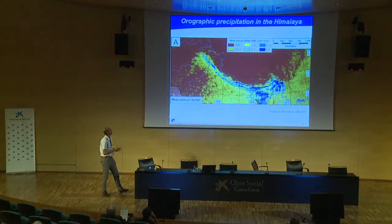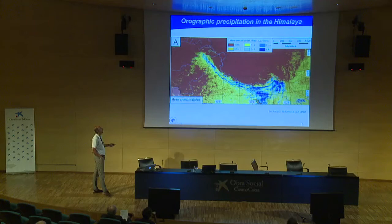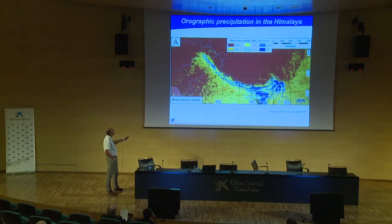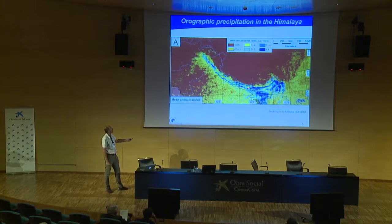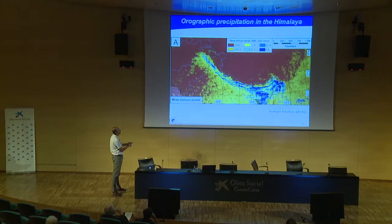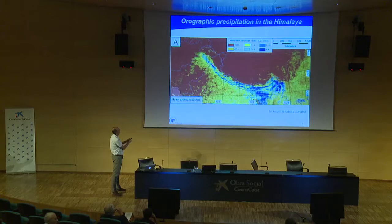This is also reflected in climate and precipitation patterns — a pretty well-known work by Bodo Booghagen, showing compilations of precipitation from satellite data. The first-order pattern is a very strong orographic precipitation gradient, with very high precipitation on the south flank of the orogen and very dry to the north. Looking in more detail, sometimes there's a single band of high precipitation, like in Bhutan, whereas in Nepal we see a double band, and moving further west that double band becomes less clearly expressed.